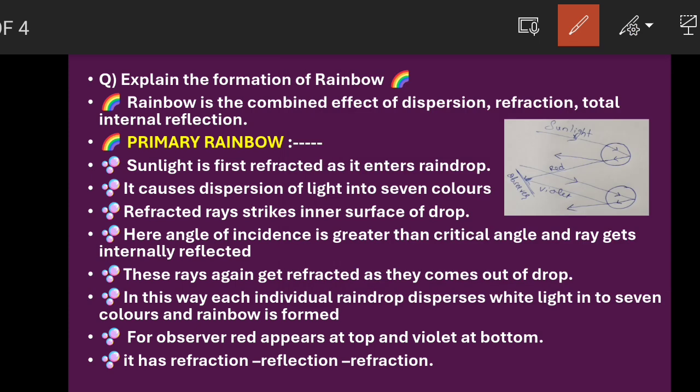So, what is happening: first, sunlight refracts through the first surface of the raindrop and enters it. This causes dispersion — it splits into seven colors. It then falls on the other surface, the inner surface, where the angle of incidence is greater than the critical angle, so it undergoes total internal reflection. While coming out, it refracts again and exits the raindrop.